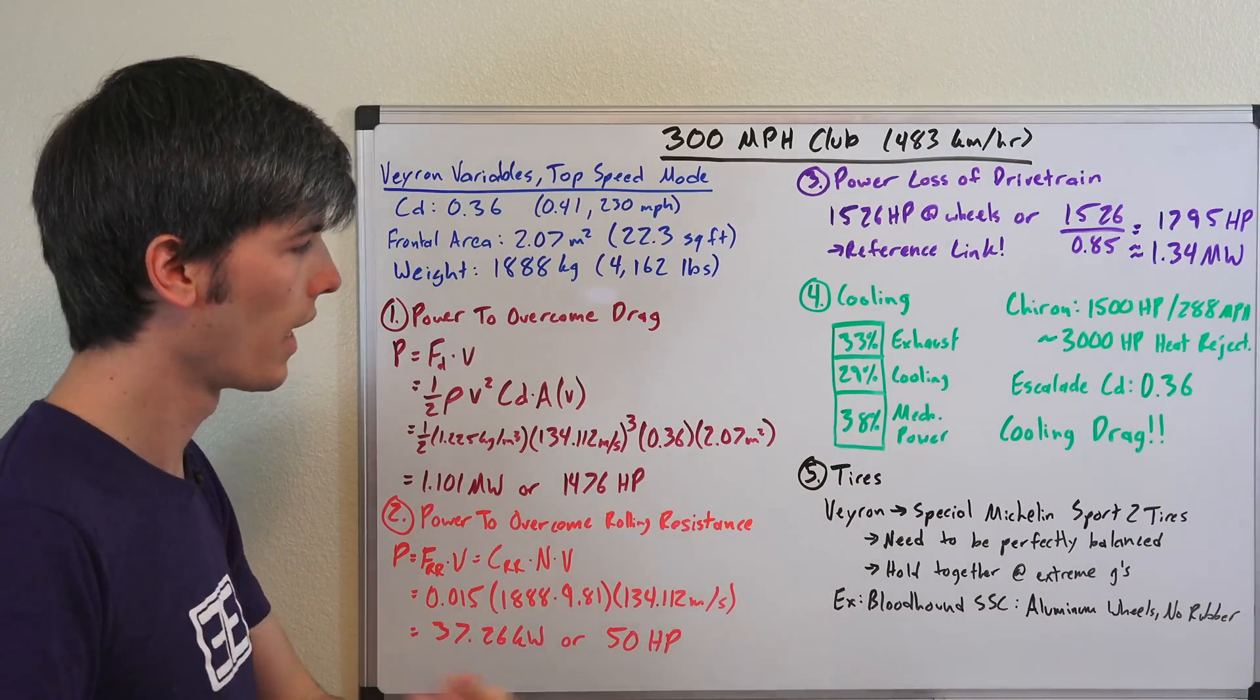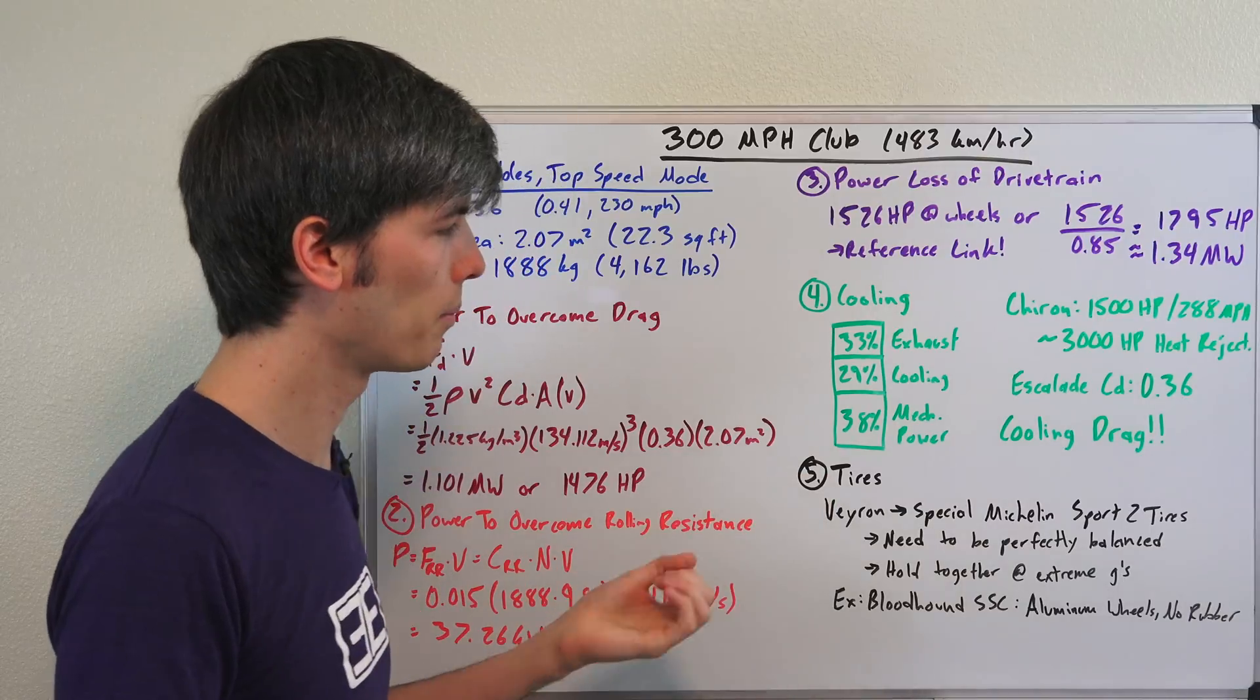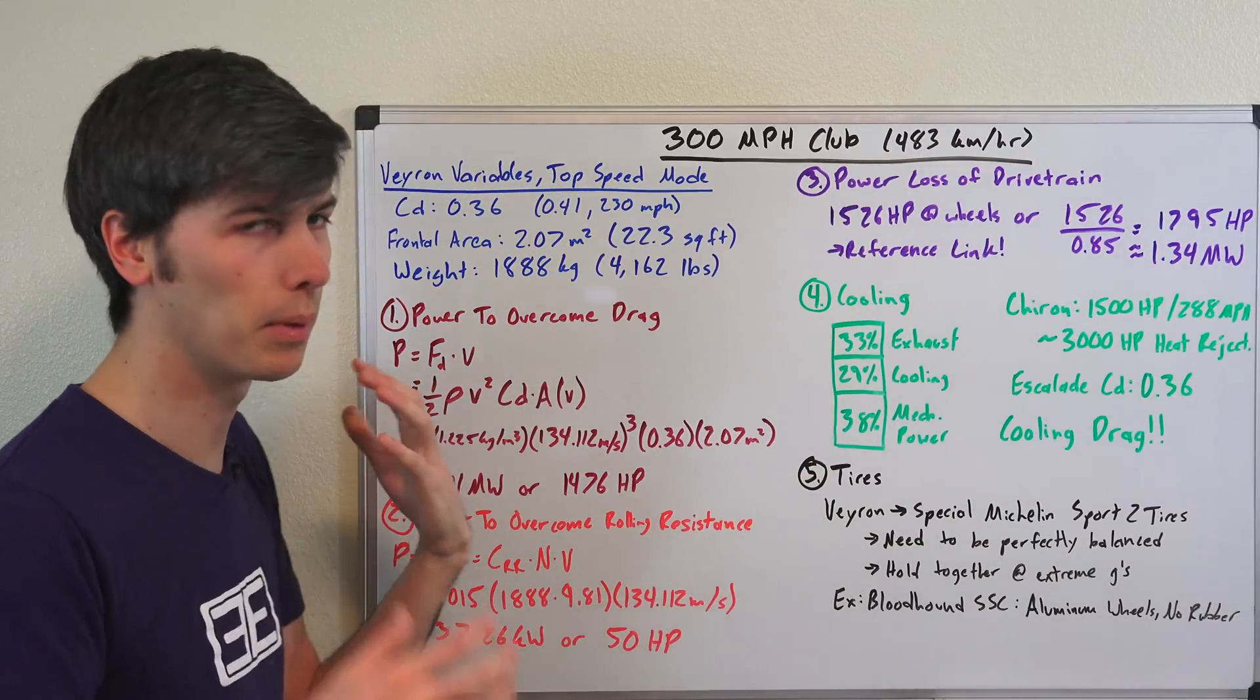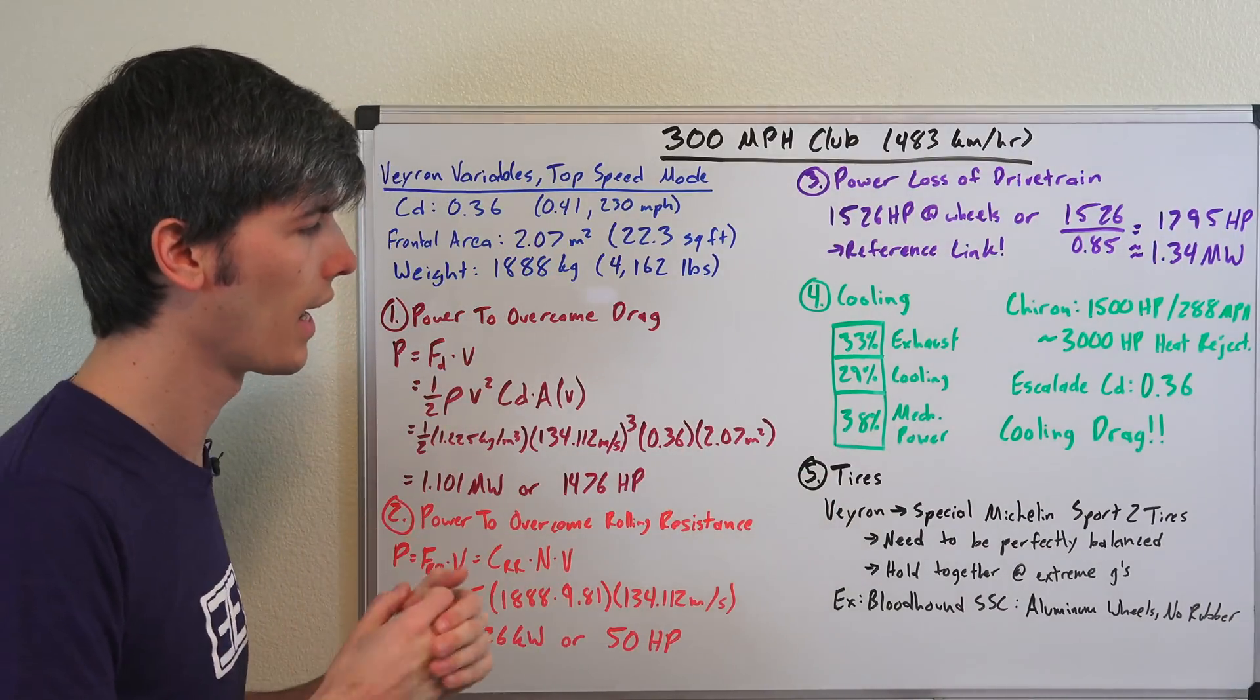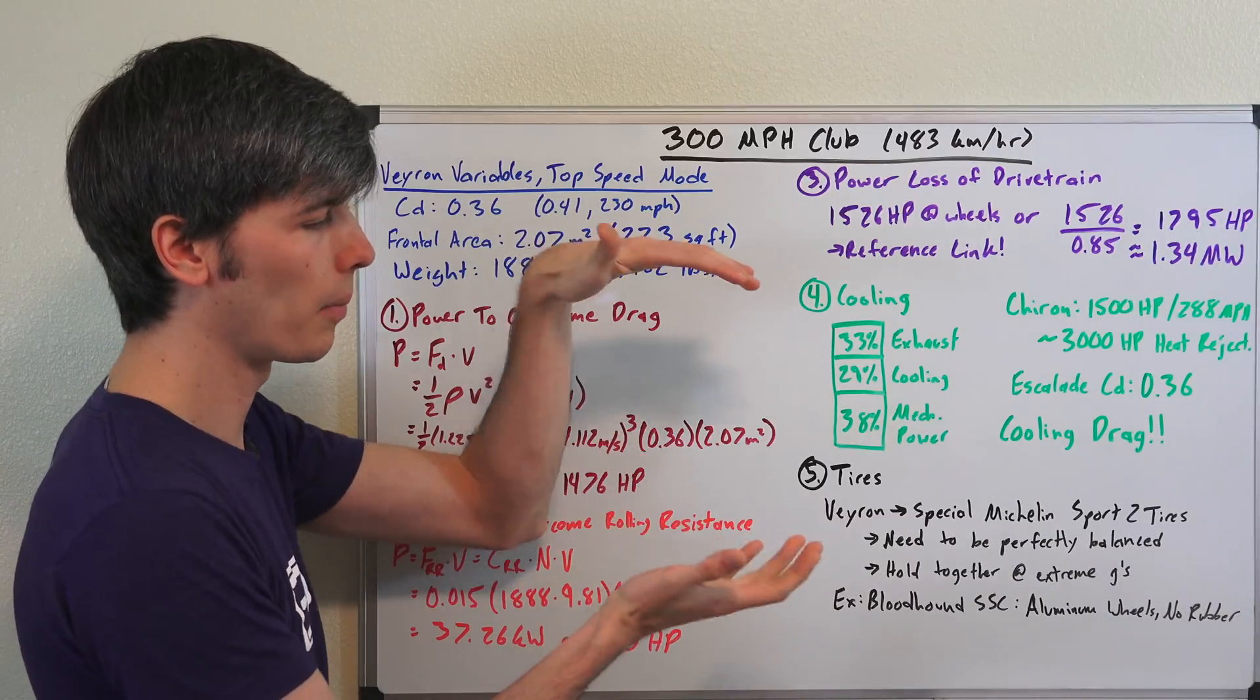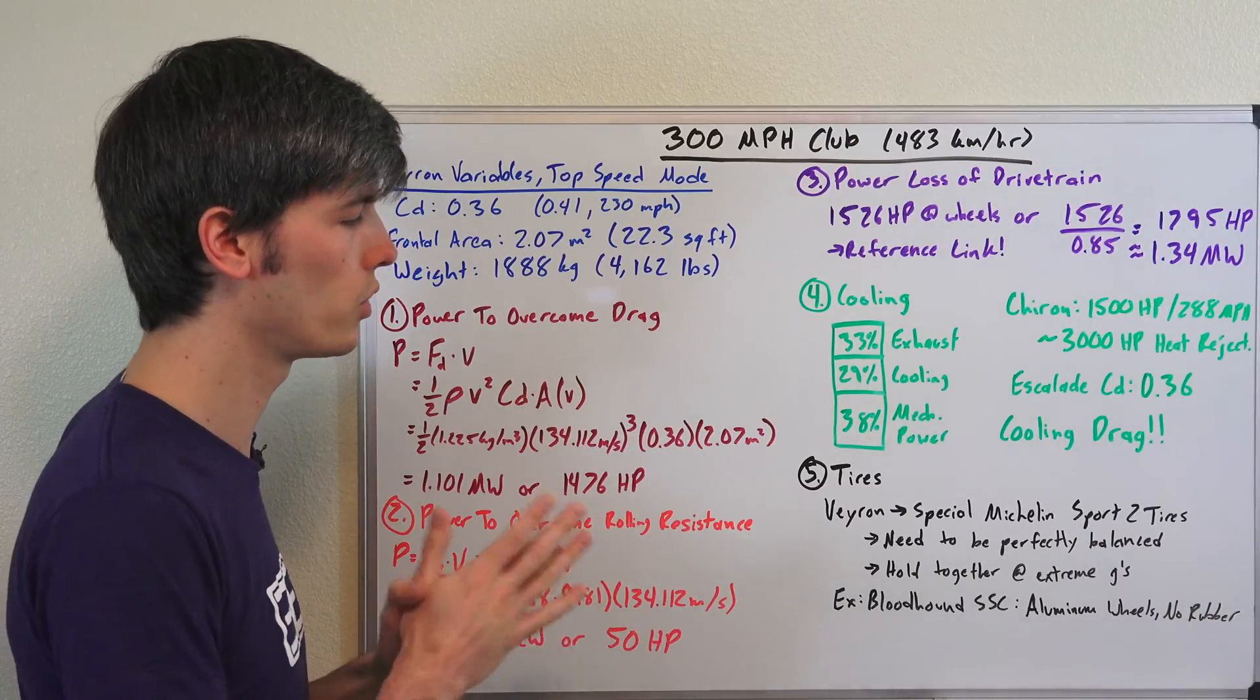And another important thing to mention is tires. So the Veyron used special Michelin Sport 2 tires. They need to be perfectly balanced so you don't have any vibrations at these ridiculously high speeds, and they need to be able to hold together, maintain the shape, maintain their contact patch on the ground at extreme G's.